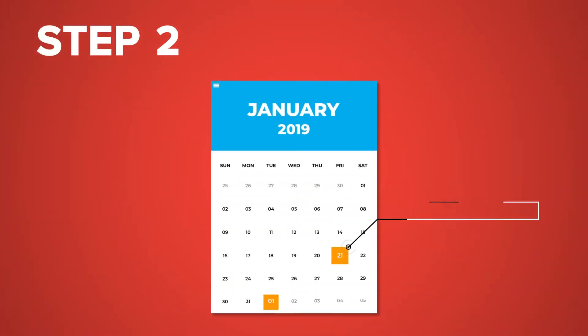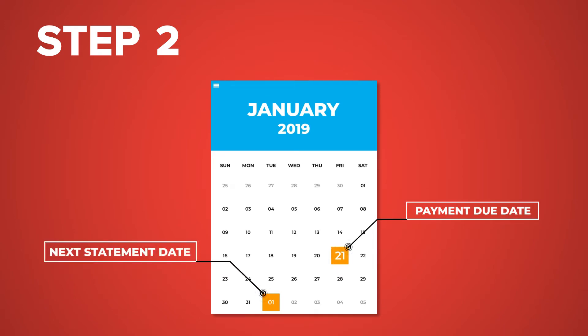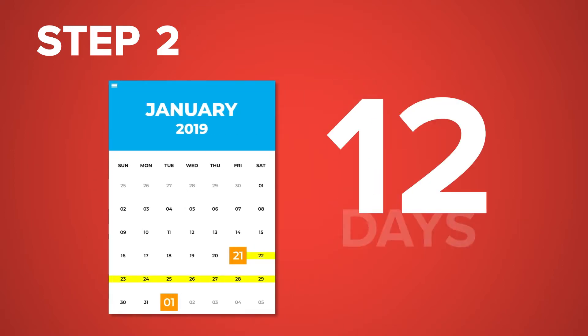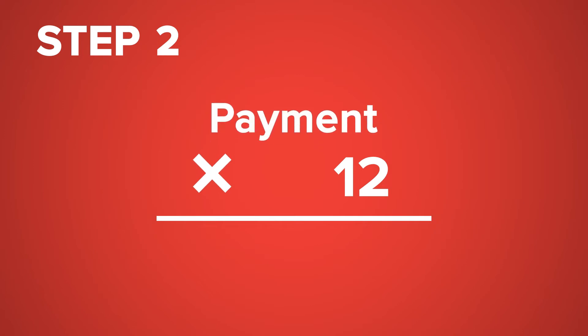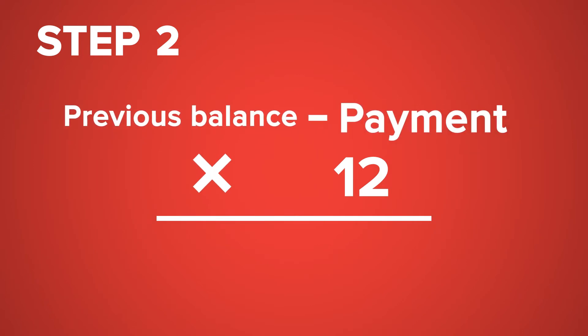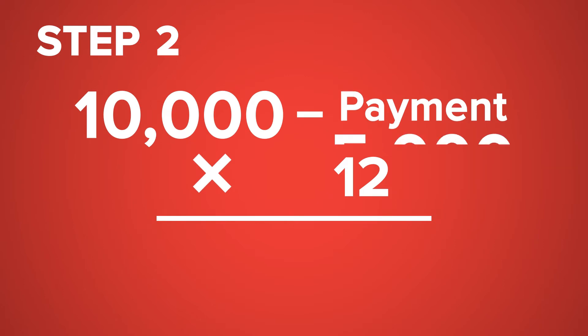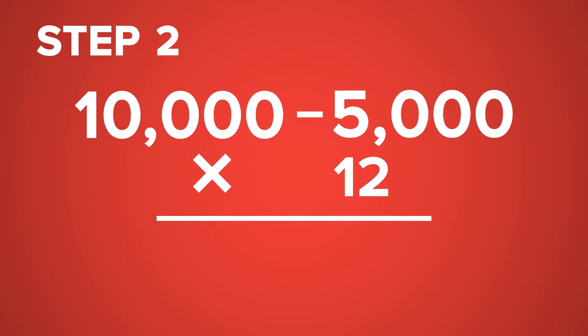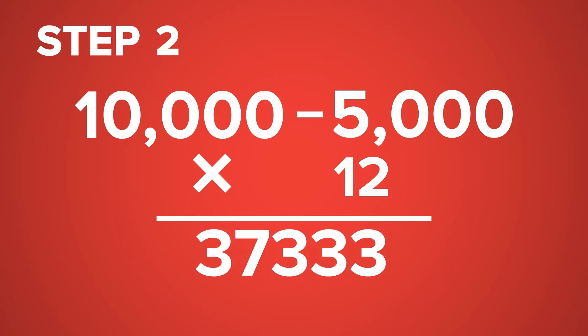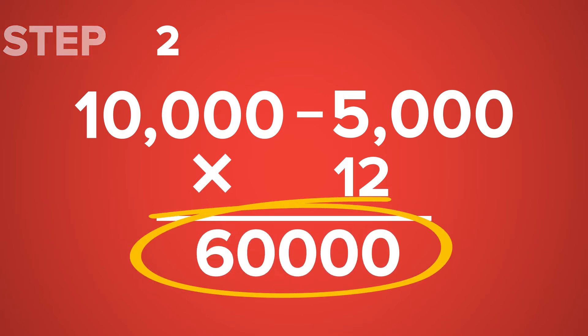Step 2. Add the number of days from the payment due date — that's January 21 — to the next statement date, that is February 1. Adding these, that's 12 days. If there is a payment, deduct the payment from the previous balance and multiply it with the number of days from the payment date until the next statement date. That's 10,000 pesos minus 5,000 pesos, the remaining balance, times 12 days — that's equal to 60,000 pesos. We'll get back to this answer later.